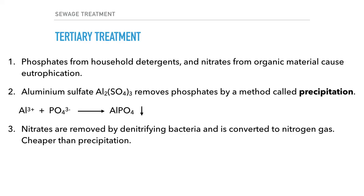The tertiary stage is the final stage. The sewerage contains phosphates and nitrate ions which, as mentioned before, can cause eutrophication. Aluminium sulphate removes phosphates by a method called precipitation, very similar to heavy metal precipitation. Phosphate reacts with aluminium to form aluminium phosphate, which is insoluble and can settle out of solution. Precipitation is expensive, and nitrates can be removed by a far cheaper option: the use of denitrifying bacteria, which convert nitrates into nitrogen gas.